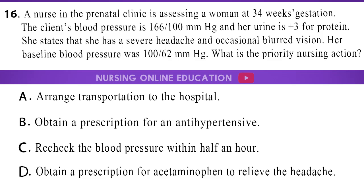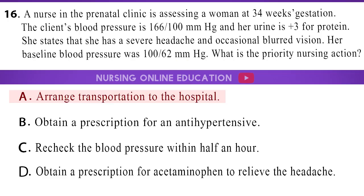Question 16. A nurse in the prenatal clinic is assessing a woman at 34 weeks gestation. The client's blood pressure is 166/100 mmHg and her urine is 3+ for protein. She states that she has a severe headache and occasional blurred vision. Her baseline blood pressure was 100/62 mmHg. What is the priority nursing action? A. Arrange transportation to the hospital. B. Obtain a prescription for an antihypertensive. C. Recheck the blood pressure within half an hour. D. Obtain a prescription for acetaminophen to relieve the headache. The answer is option A: Arrange transportation to the hospital.